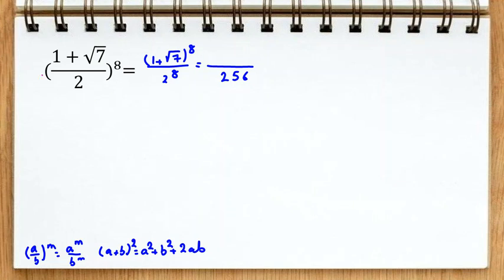1 plus root 7 to the 8. Let's calculate first to the power of 2. 1 plus 7 is 8 plus 2 root 7.